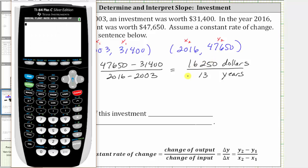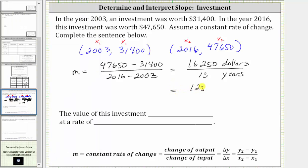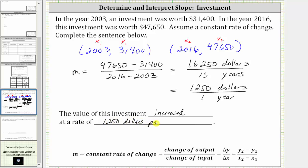Now let's determine this quotient. 16,250 divided by 13 is equal to 1,250, which gives us $1,250 per one year. Because the constant rate of change is positive, we know the investment is increasing — we can also tell because the investment went up from $31,400 to $47,650. So the value of this investment increased at a rate of $1,250 per year.